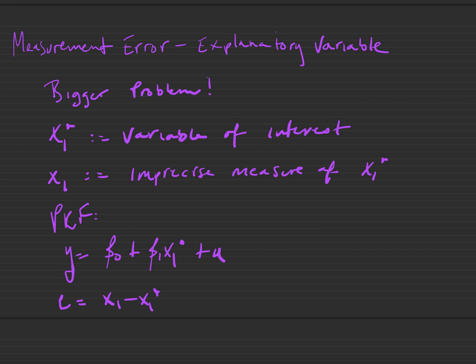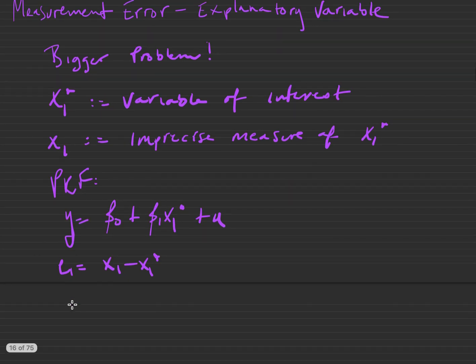This is a bigger problem. Let's denote x1 star as the variable of interest and x1 as the imprecise measure of x1 star. Let the population regression function be y equals beta naught plus beta 1 times x1 star plus u, and let e1 equal x1 minus x1 star.